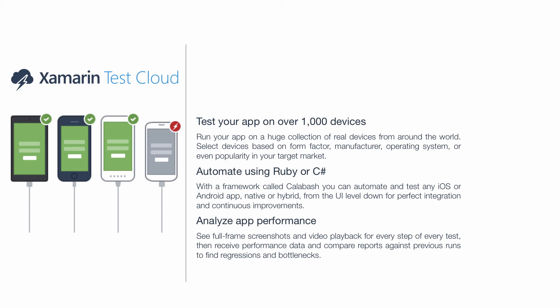Samarine Test Cloud also allows developers to precisely analyze their app's performance, so they can understand in a better way where there are bottlenecks or where the app is getting a little slow. It's very simple because you actually have screenshots and video playback from when your application was running on that device, so you can go step by step and see exactly where your app is not performing well.